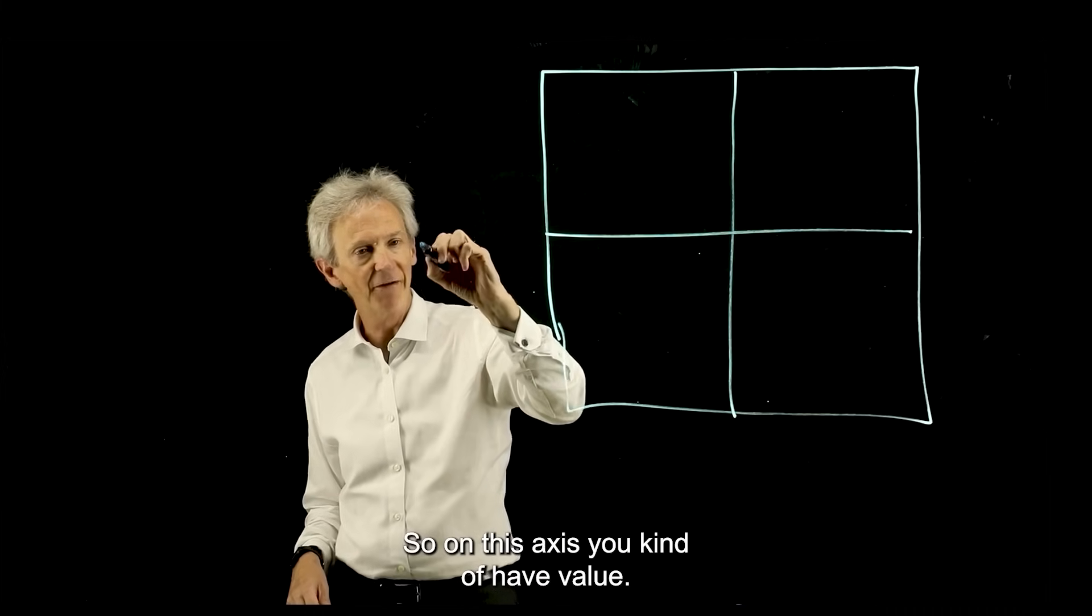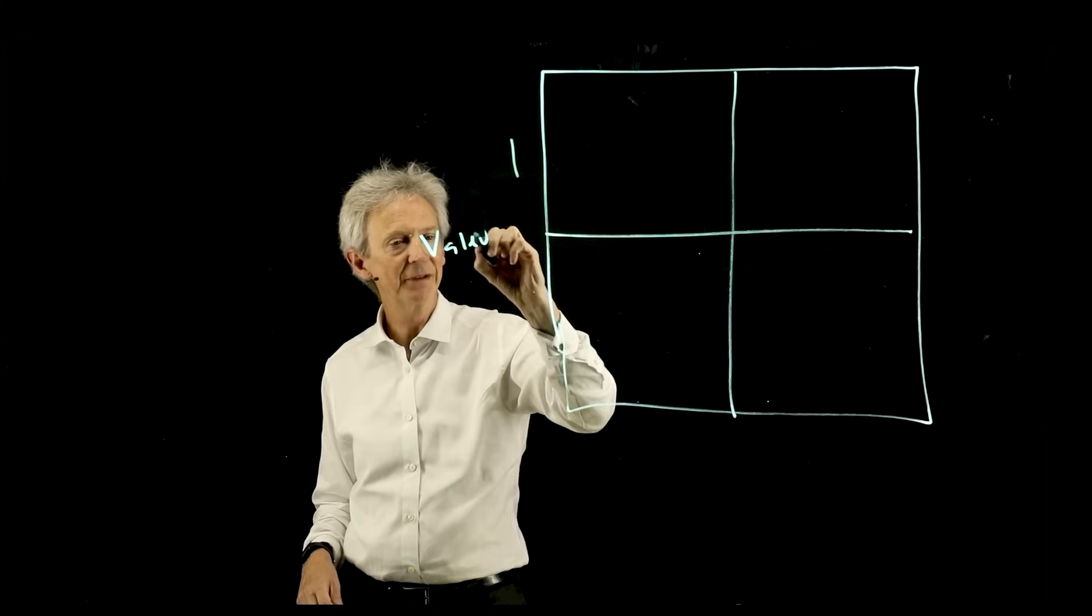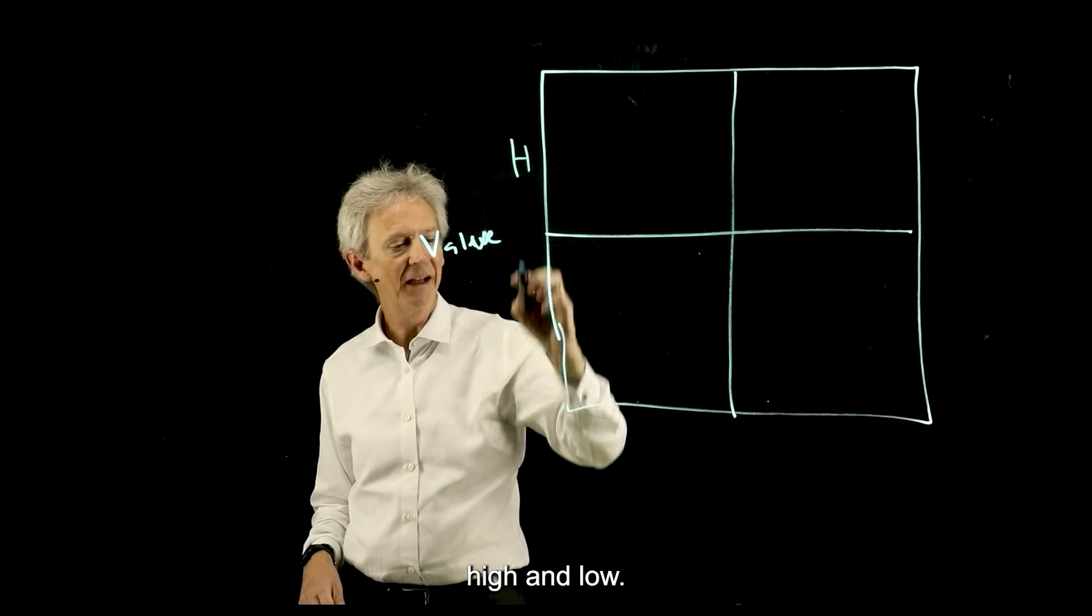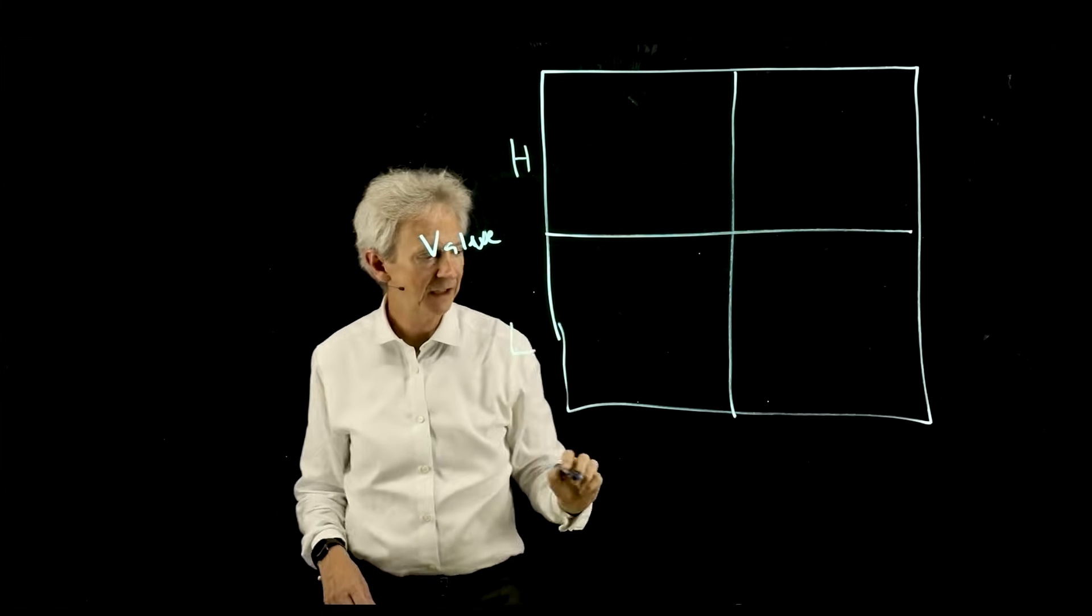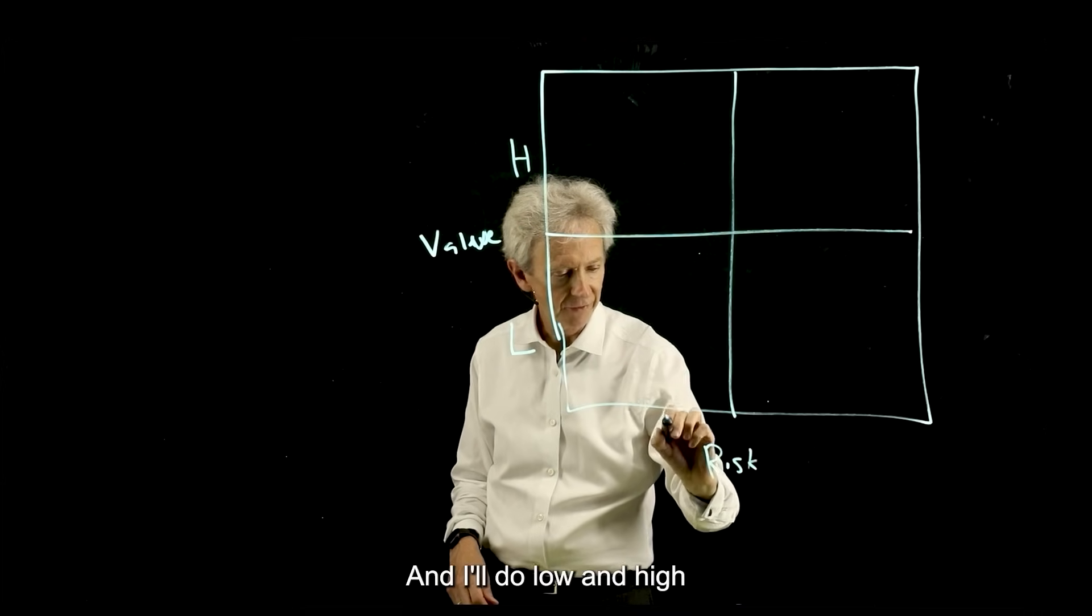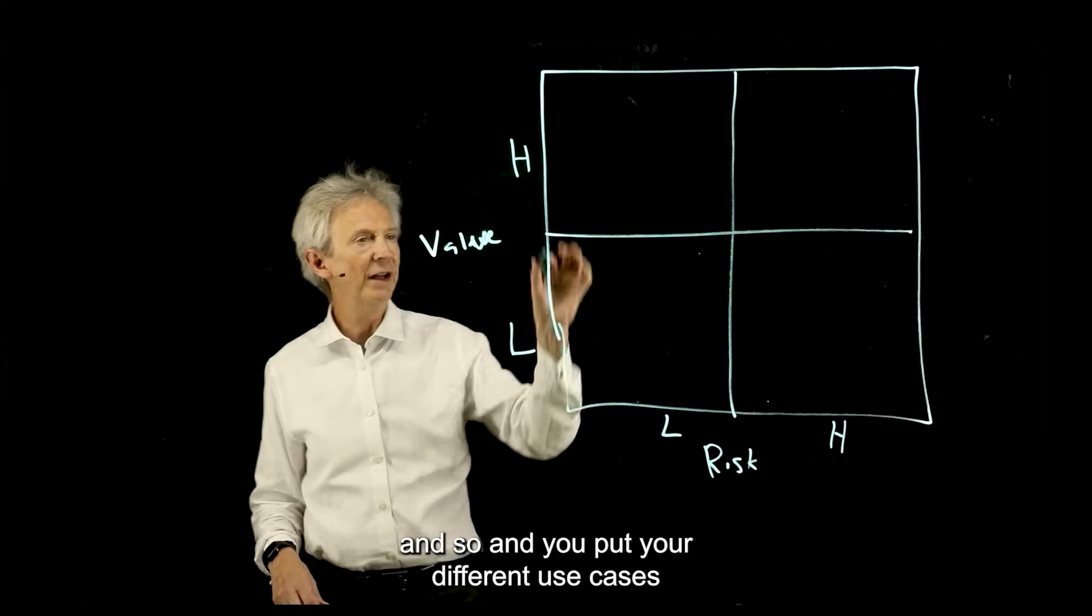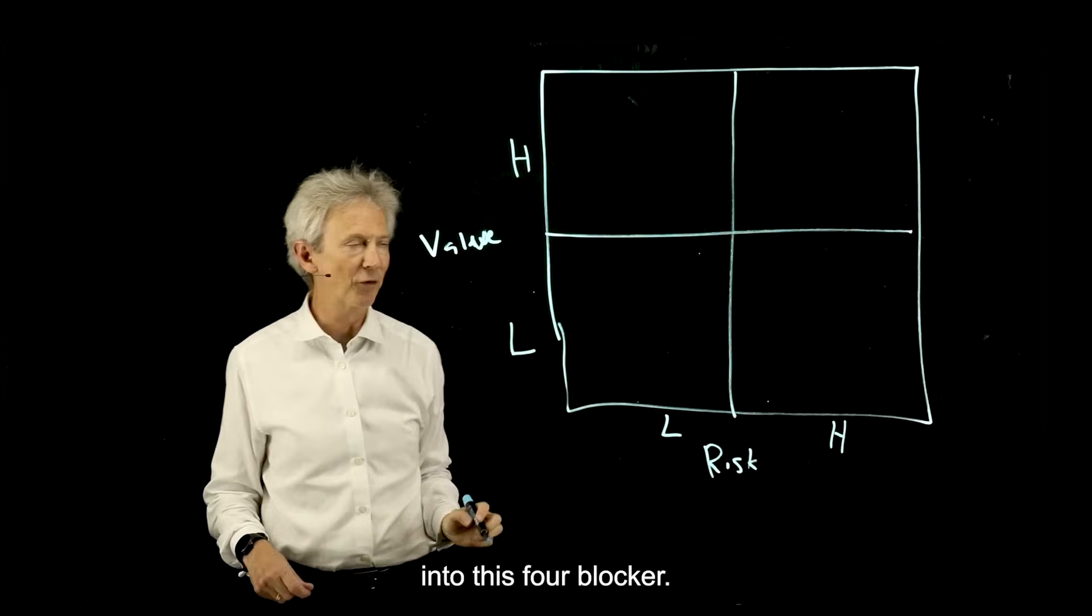On this axis, you have value. This would be high and low. Then on this axis, you have risk. I'll do low and high. You put your different use cases into this four-blocker.